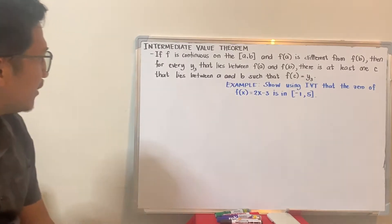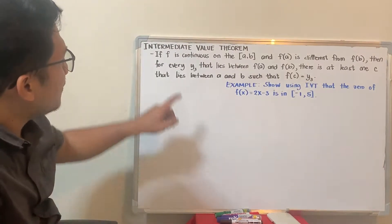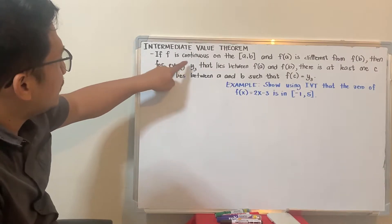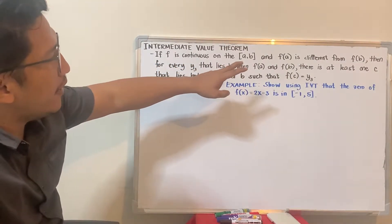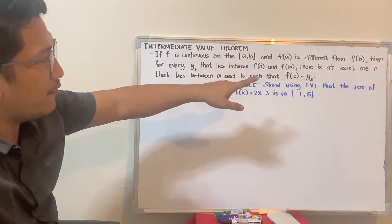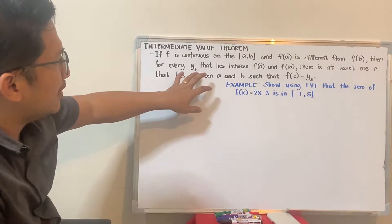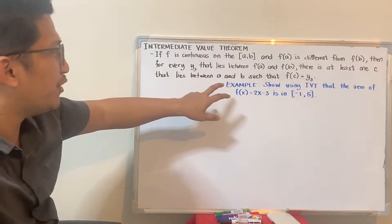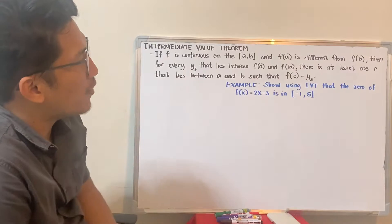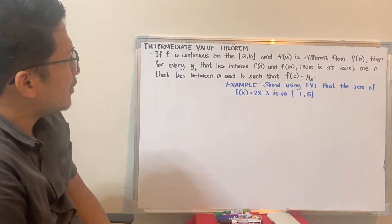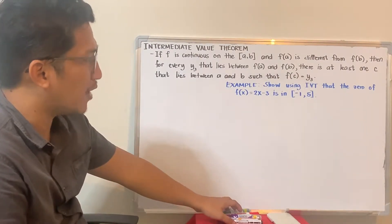The Intermediate Value Theorem states that if the function f is continuous on the closed interval [a, b], and f(a) is different from f(b), then for every y-sub-3 that lies between f(a) and f(b), there is at least one c that lies between a and b such that f(c) is equal to y-sub-3.